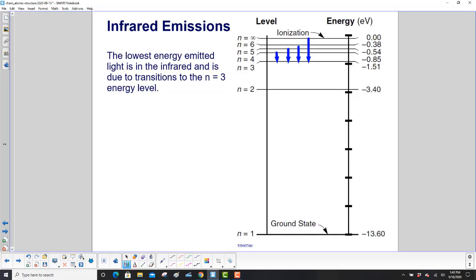And finally, the lowest energy emitted light is in the infrared. And that is due to transitions to the n equals 3 level. So here's 4 to 3, 5 to 3, etc. And you can see how those are smaller energies. The arrows are smaller.